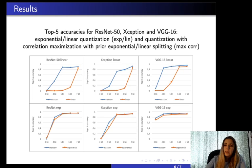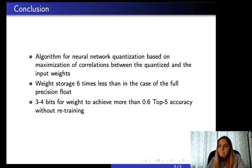Finally, let me just sum up today's main topic. We developed the algorithm for neural network quantization based on maximization of correlation between the quantized and the input weights. Under such compression, the required memory necessary to store weight is approximately six times less than in the case of the full precision float with the same accuracy. Our compression allows to use only three or four bits to achieve more than 60 percent top-five accuracy for different architectures. Thank you for attention!